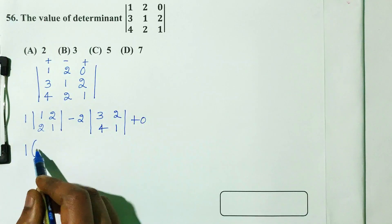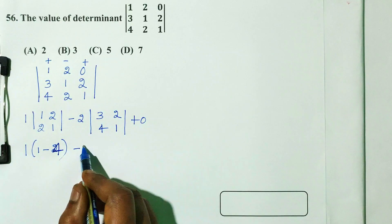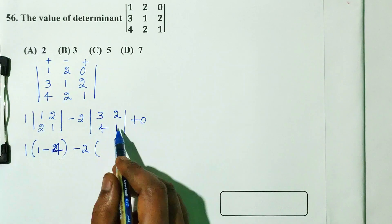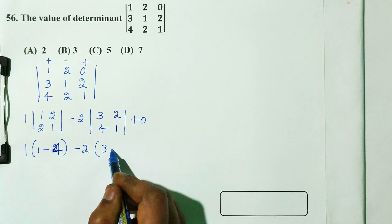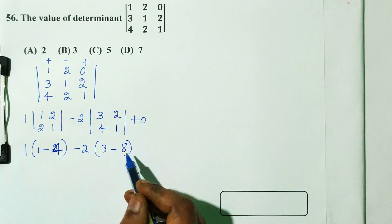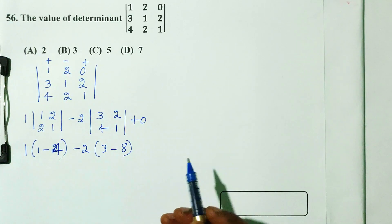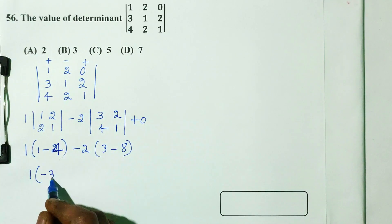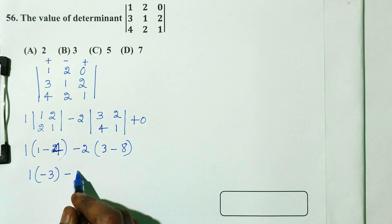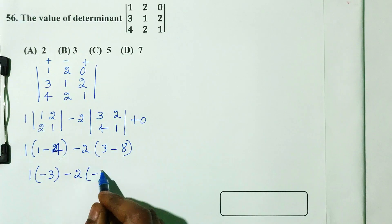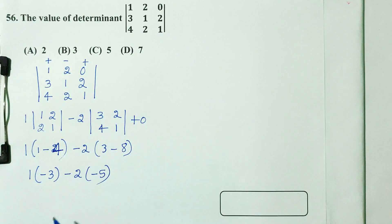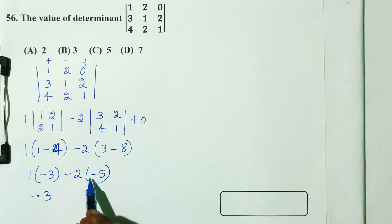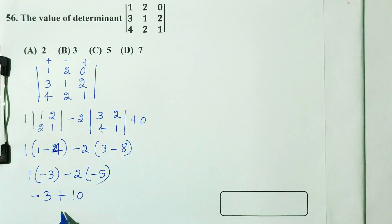Calculating the determinants: 1 into 1 is 1, minus minus 2 giving plus 2 — combined gives minus 1. Then 3 into 1 is 3, minus 4 into 2 is 8, so 3 minus 8 is minus 5. Next: plus into minus, minus 1 into 3 is minus 3; minus into minus plus, 2 into 5 is 10; so 10 minus 3 gives 7.